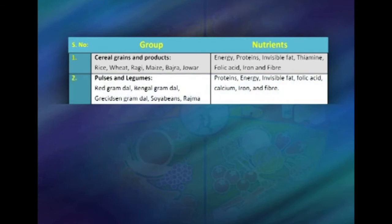The second group is pulses and legumes, which includes dals such as red gram dal and green gram dal, and whole grams like rajma, chole, and chana. This food group is rich in proteins. It also provides energy, invisible fat, and certain amounts of calcium, iron, and folic acid.